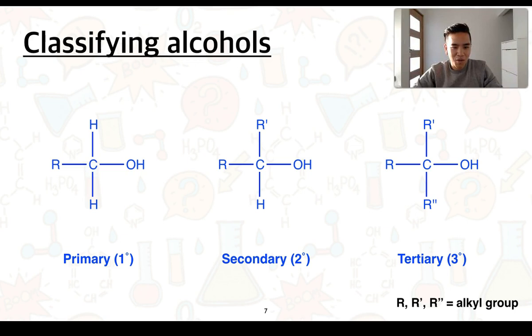We say that we have a primary alcohol when the carbon bonded to the hydroxyl group is bonded to one other carbon atom. We can refer to this as an alkyl group which represents a carbon or a section of a hydrocarbon chain.